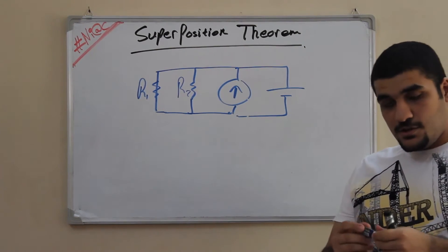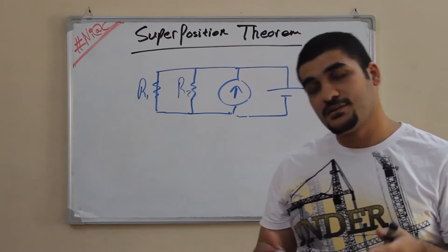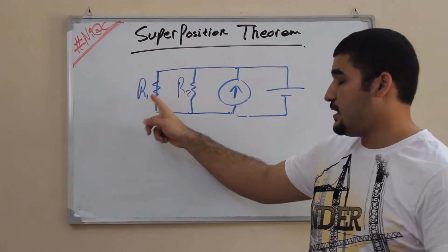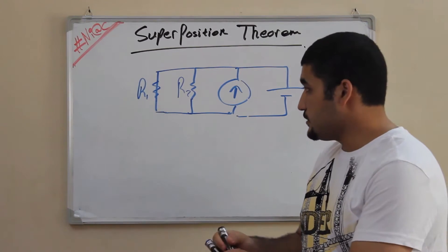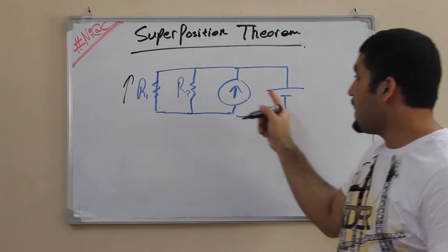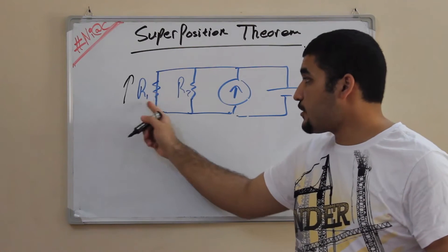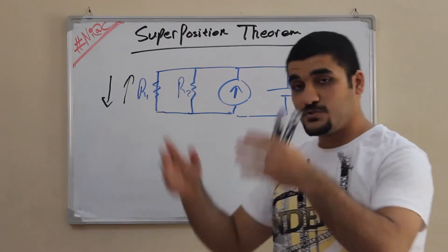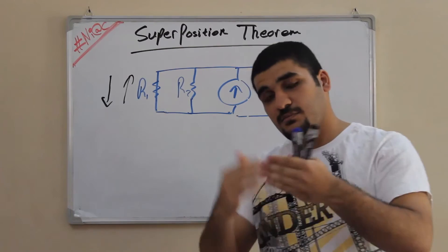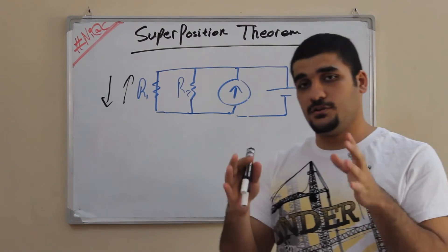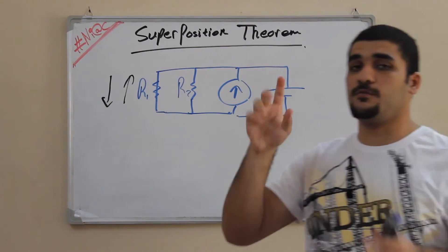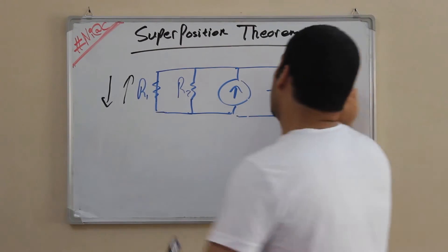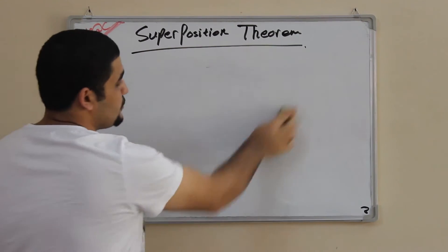What you have to take into concern in this theorem is the direction — the direction of voltage and the direction of current. For example, if the current source makes a voltage across R1 in one direction and the voltage source makes a voltage across this component in the other direction, at the end you sum these two directions together. Since they are opposite, it's one minus the other to get the final result. That's the superposition — it is very, very easy. We're going to jump right to an example.